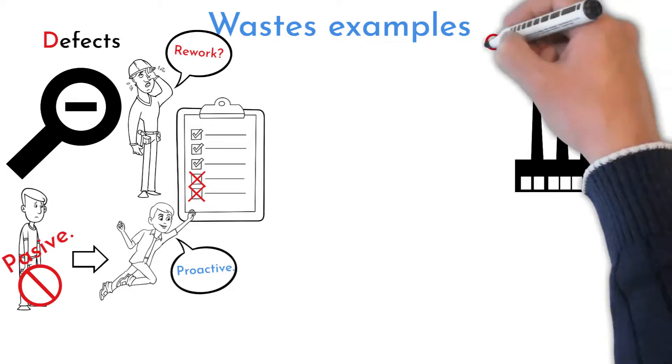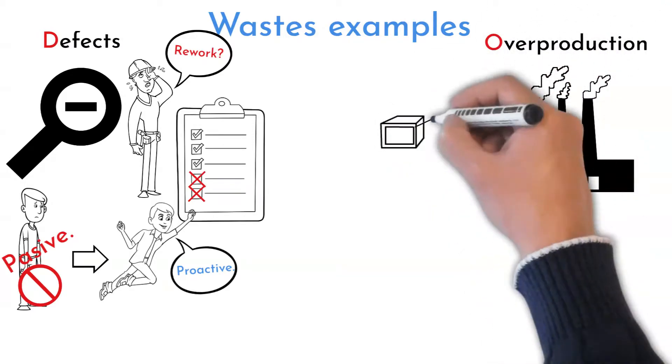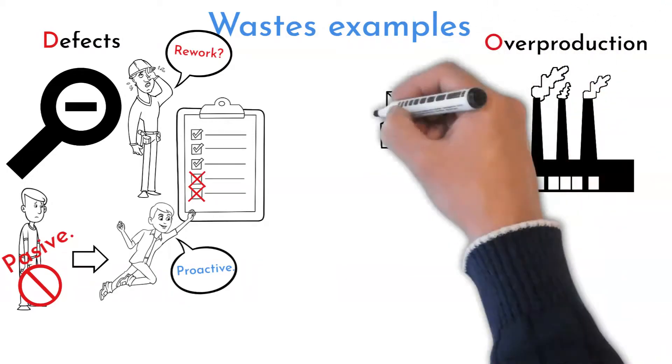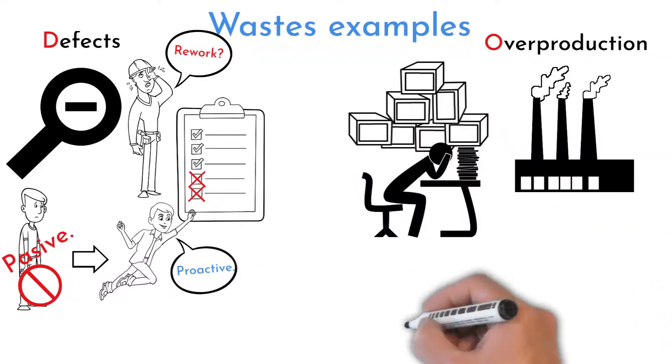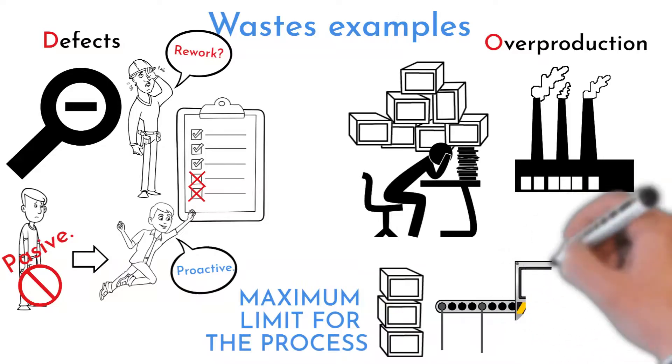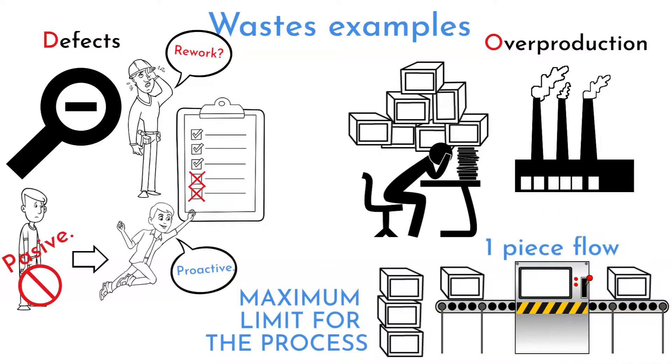Overproduction is not needed or too early done production. It is called mother of all wastes. It can be product sitting at warehouse, as well as not read reports or graphs. Set reasonable inventory limits and set one piece flow or small batch production.